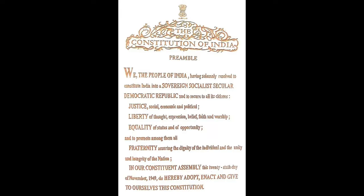The Constitution of India preamble: We the people of India, having solemnly resolved to constitute India into a sovereign socialist secular democratic Republic, and to secure to all its citizens justice — social, economic and political — liberty of thought, expression, belief, faith and worship, equality of status and of opportunity, and to promote among them all fraternity assuring the dignity of the individual and the unity and integrity of the nation. In our Constituent Assembly this 26th day of November 1949, do hereby adopt, enact and give to ourselves this Constitution.